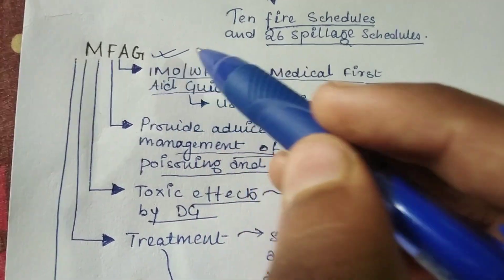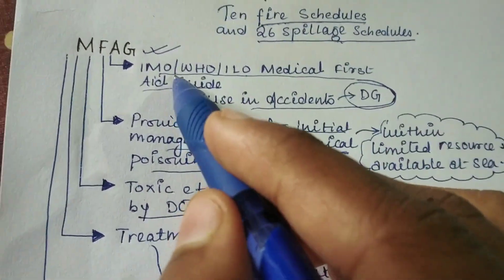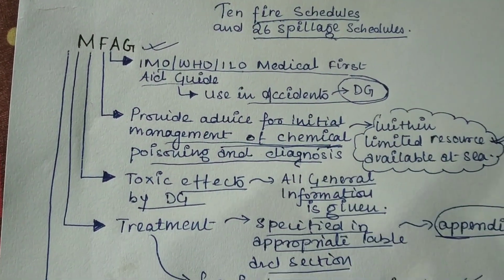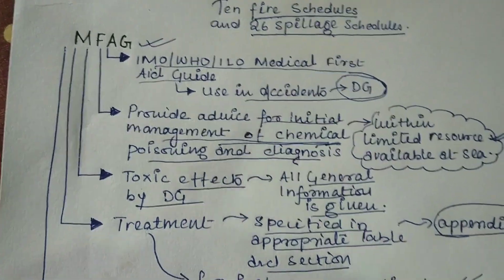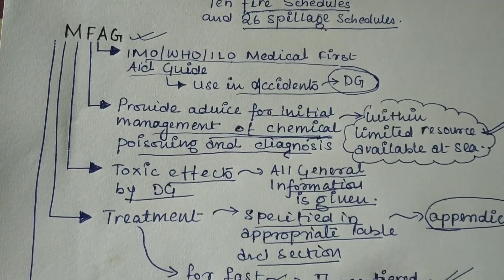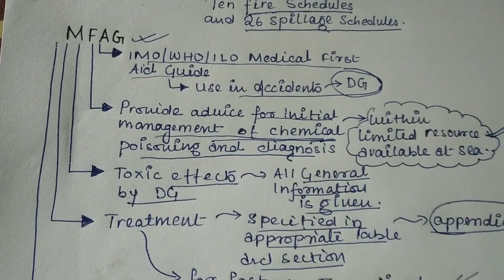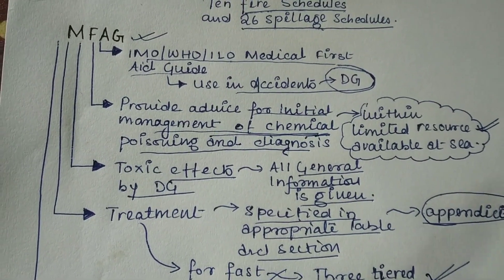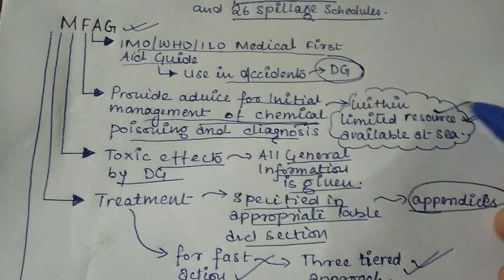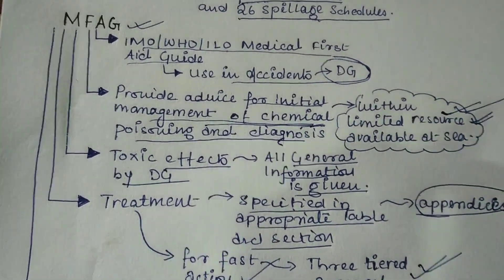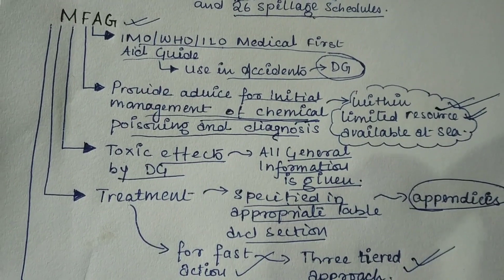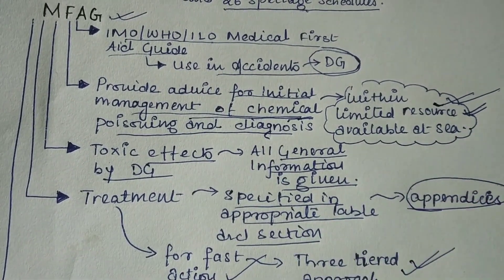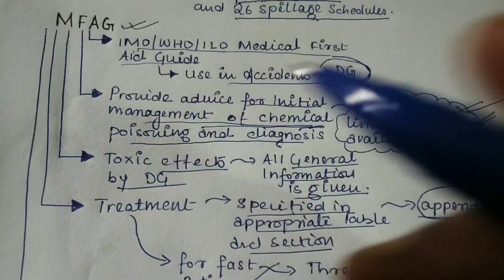Now we will talk about MFAG. It is an IMO, WHO, and ILO recommended Medical First Aid Guide, which can be used in case of accidents involving dangerous goods. It provides advice for initial management of chemical poisoning and diagnosis. This advice is within the limited resources available at sea — it does not give advice that is not possible to carry out at sea.